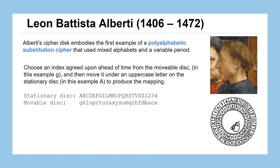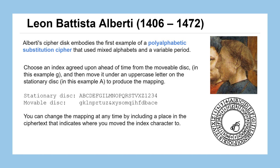If we lay out the mappings here, the stationary disk — the outside ring — is A, B, C, D, E, F, G, and so on, and then the movable disk would be G, K, L, N, P, and so on. That's your mapping. Alberti even had a plan for numbers to be used with a code book, where a number like 231 would correspond to a word you'd look up — but we're not going to worry about those. We'll keep working with just letters.